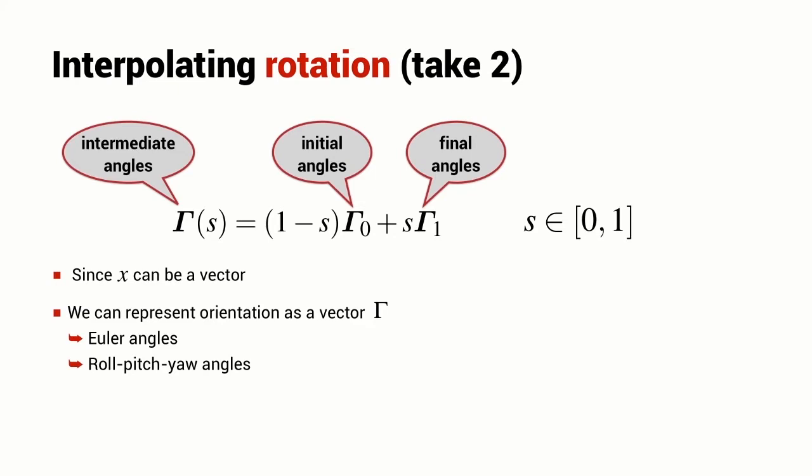So if we consider this vector of angles as the symbol gamma, then we can introduce the initial angles, the final angles, and then we can interpolate the intermediate angles. If our initial and final orientations are given in terms of rotation matrices, then we can convert those to an initial set of angles and a final set of angles. We interpolate the intermediate angles and we can convert those back to a rotation matrix if we so desire.